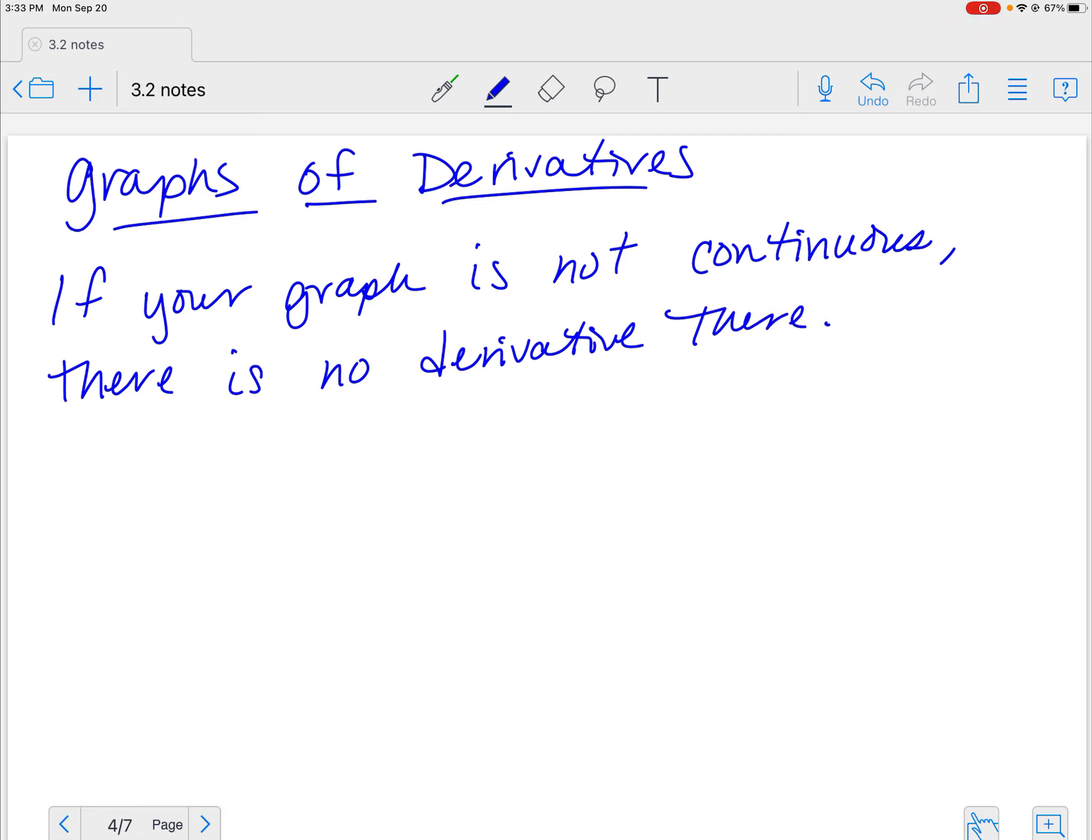How did we find derivatives? We're finding limits, right? If your graph is not continuous, you don't have a limit there. Ergo, you don't have a derivative there. See how it all connects? So if your graph is not continuous, automatic no derivative there.